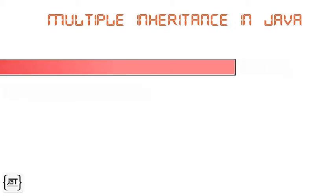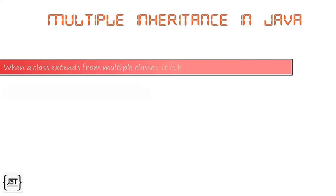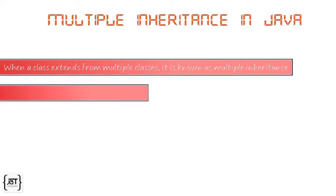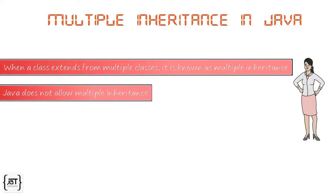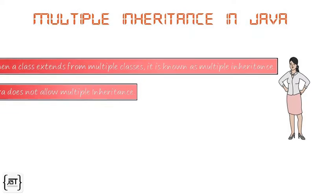Multiple inheritance — when a class extends from multiple classes — is known as multiple inheritance. Java does not allow multiple inheritance. In this video, we will explore the reason behind this.